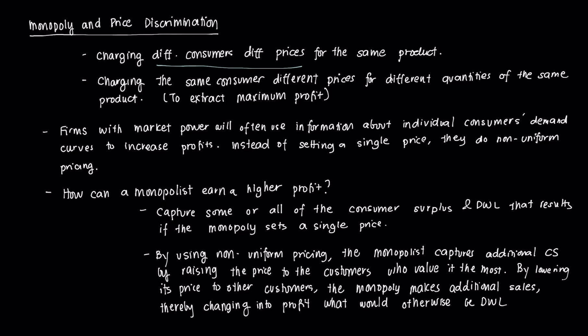All of these forms of price discrimination are to extract maximum profit, and they do that by getting it from the consumer surplus and trying to minimize the deadweight loss that we discussed in the last few videos. Essentially, firms with market power like monopolists will often use the information that they know about individual consumer demand curves to increase their profits. Instead of setting just a uniform price, they can perform non-uniform pricing.